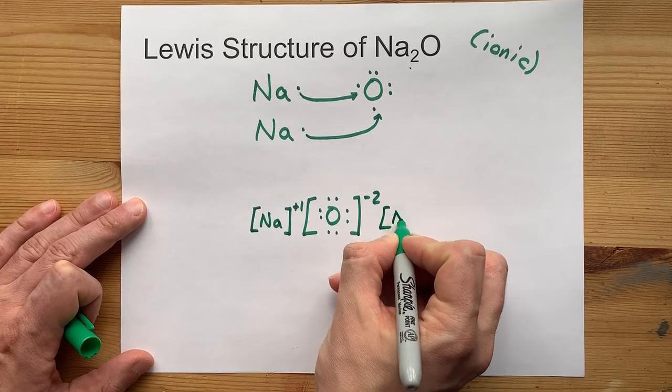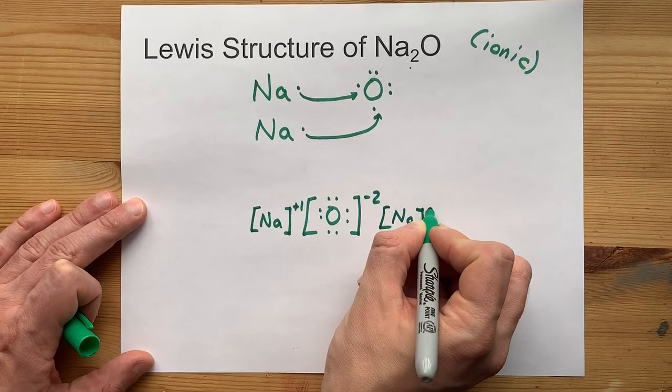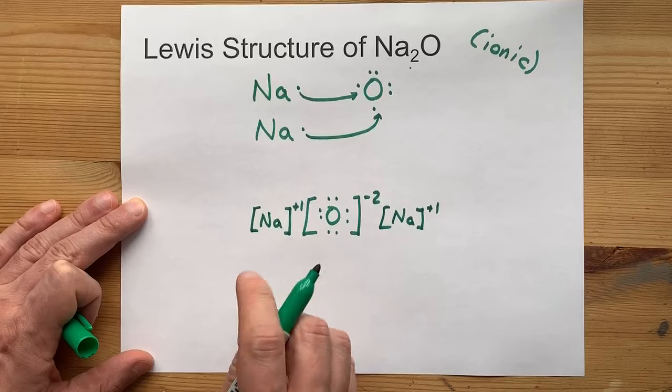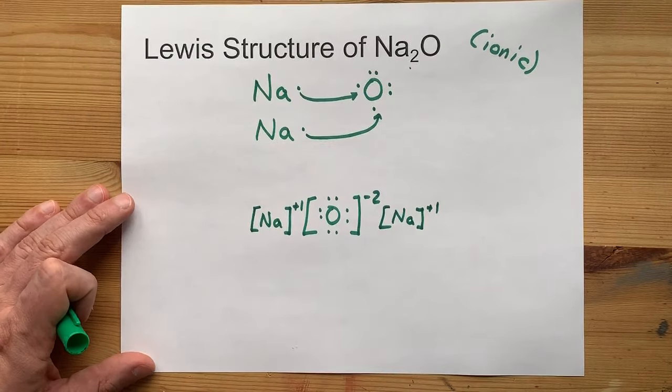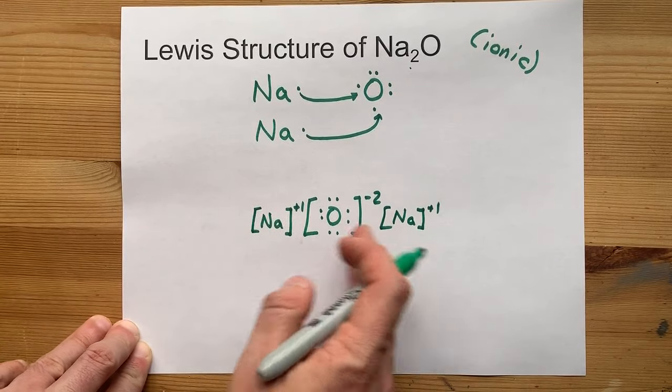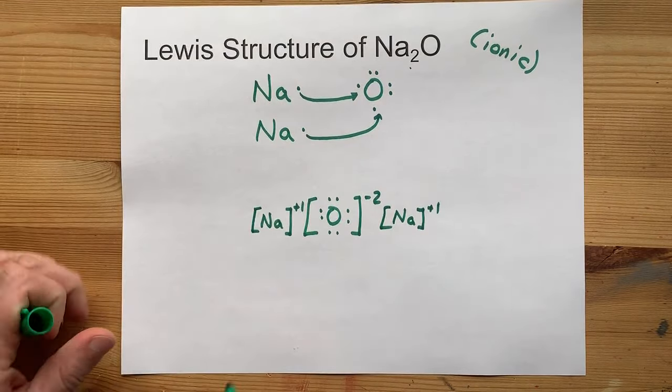And lastly, we're going to need to draw the second one in there, because after all, it required 2 sodiums to sacrifice their electrons to complete the octet on oxygen. This is your complete Lewis structure for sodium oxide.